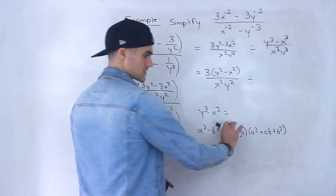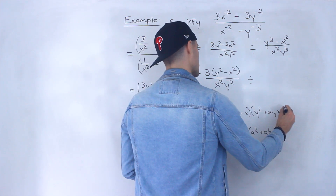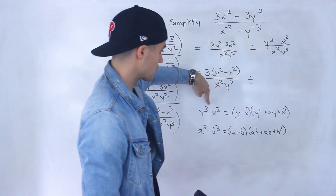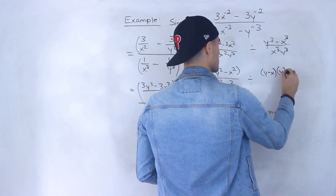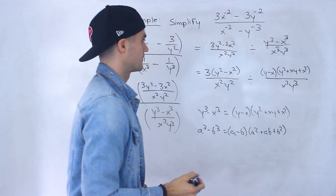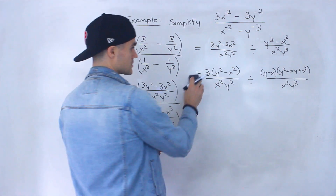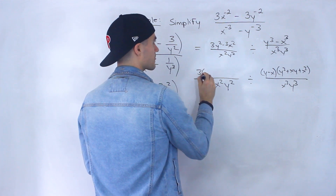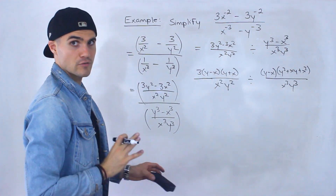The y value is a and the x value is b in this case, so we just substitute them in. We'd have y minus x, times y squared plus xy plus x squared. So y cubed minus x cubed factors into that: y minus x, times y squared plus xy plus x squared, all over x cubed y cubed. And then y squared minus x squared — notice that's a difference of squares — so the numerator factors as y minus x, times y plus x.